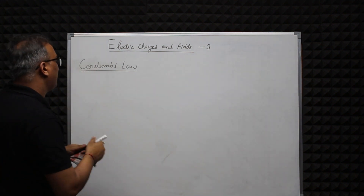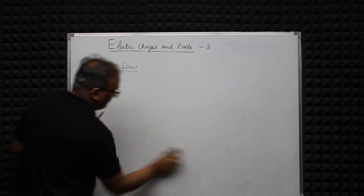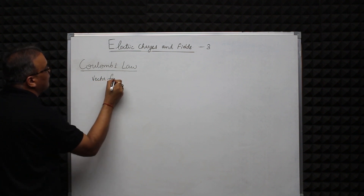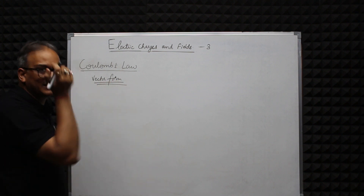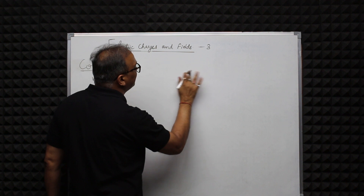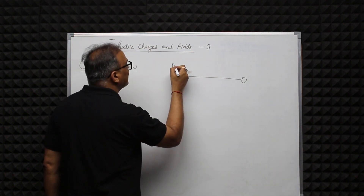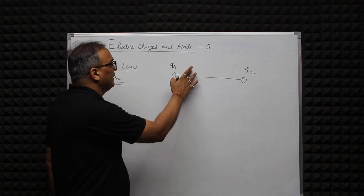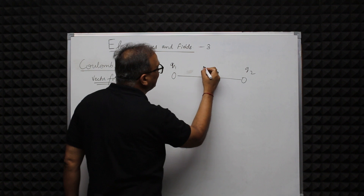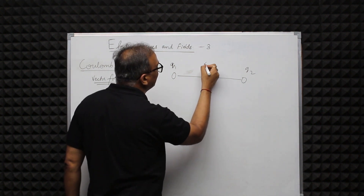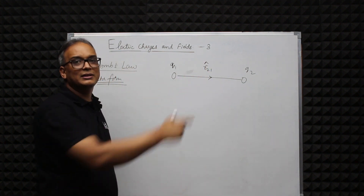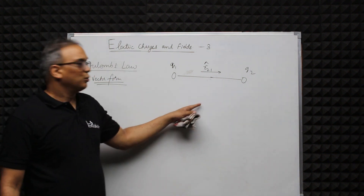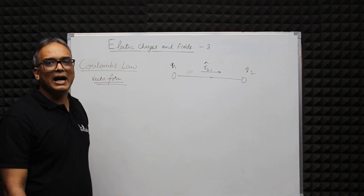Now let's look at the vector form of Coulomb's Law. If we have charge q1 at one point and charge q2 at another point, the unit vector pointing from the first charge towards the second charge is written as r̂₂₁. Similarly, the unit vector from the second charge towards the first charge is written as r̂₁₂.